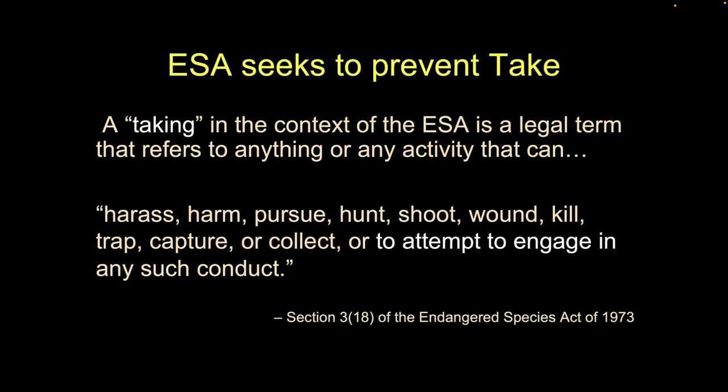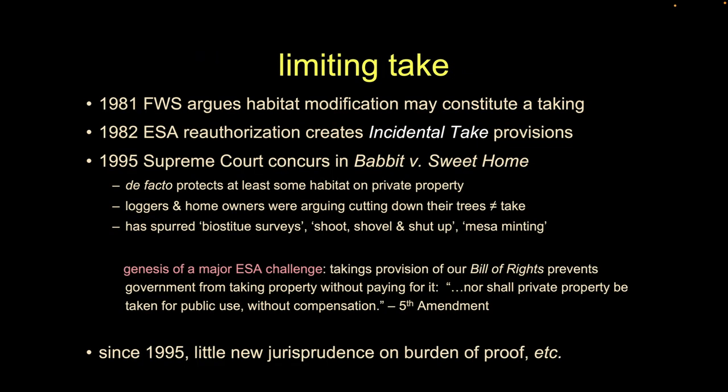The ESA works to prevent take — any kind of take: shooting, disturbing, what have you. Starting in the 1980s, we started saying that habitat modification may also constitute a taking. Even if there's no critter right there — say a bird has migrated to Canada and in the intervening time you mow down all the vegetation — that could be considered a taking. In 1982 we created what's called an incidental take permit, which allows activities that might accidentally harm some individuals as long as you minimize the harm and mitigate for it.